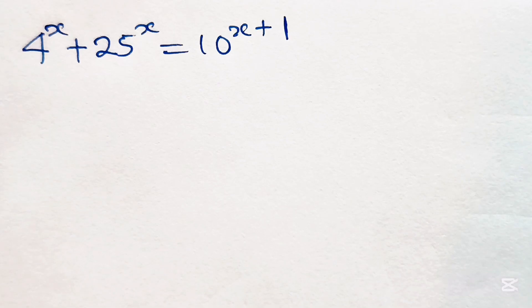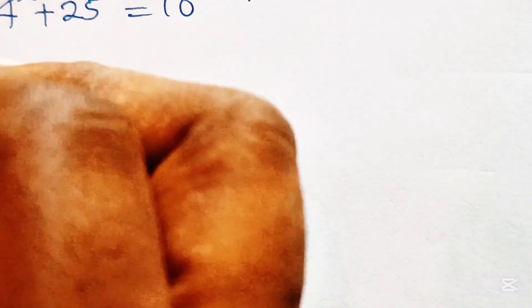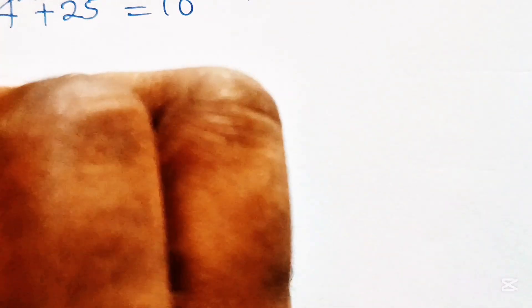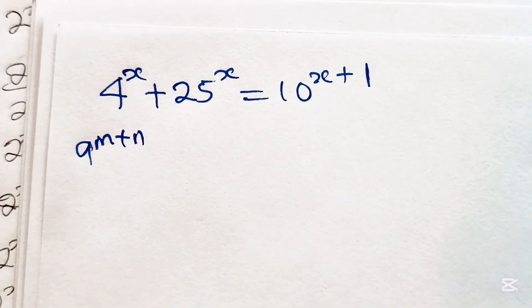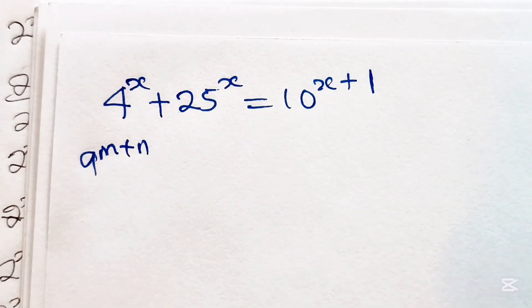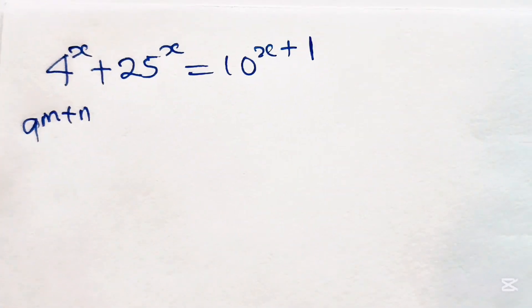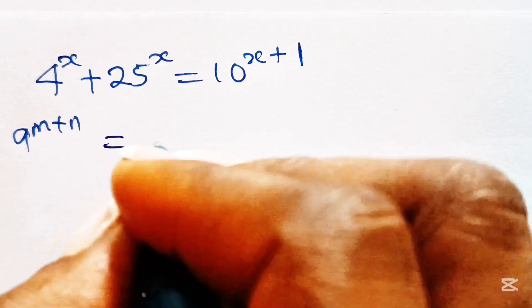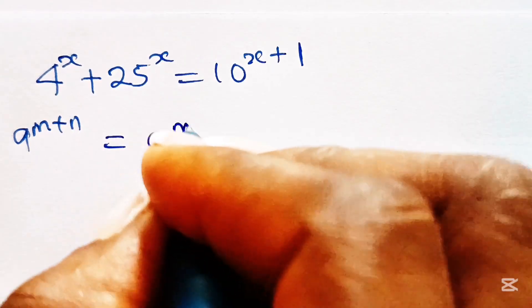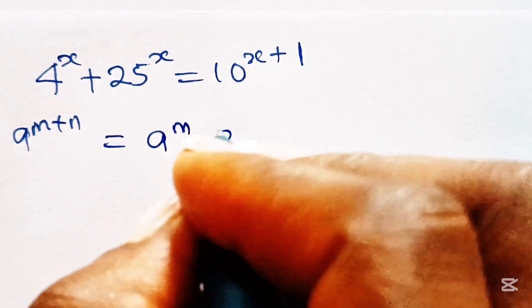First, you need to note that a to the power of m plus n is equal to a to the power of m multiplied by a to the power of n.